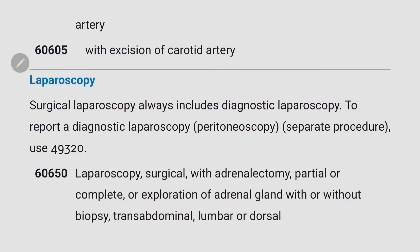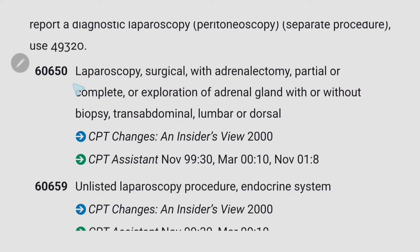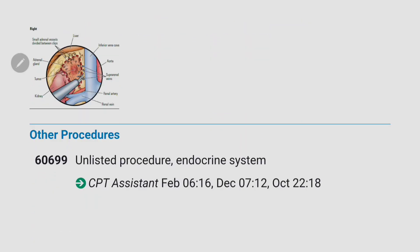The important guideline for laparoscopy is that surgical laparoscopy always includes diagnostic laparoscopy. We then have codes for laparoscopic adrenalectomy, 60650, and 60659 for unlisted laparoscopy procedure of the endocrine system. The last code, 60699, is for unlisted procedure of the endocrine system. The important thing to remember for thyroidectomy is whether they have mentioned partial thyroid lobectomy or total thyroid lobectomy - you have to check all those terms carefully.